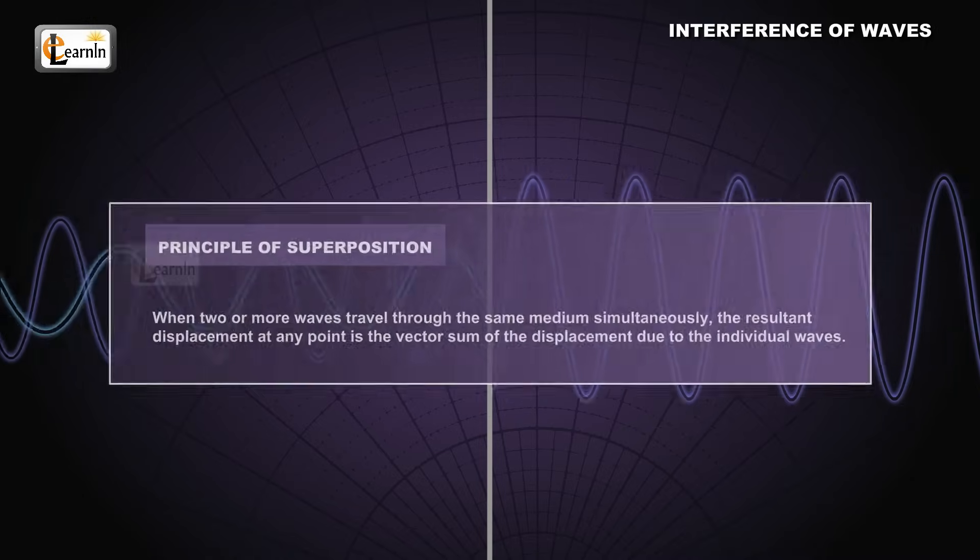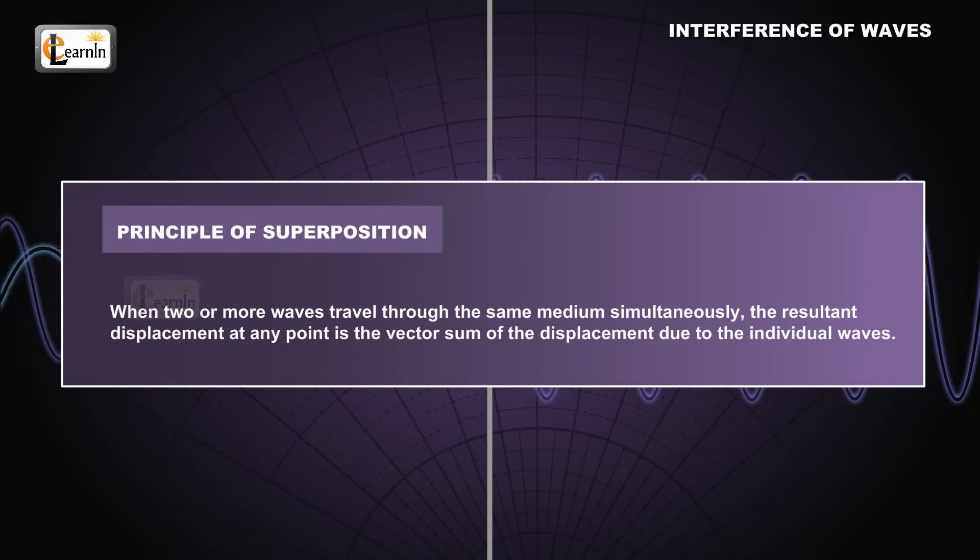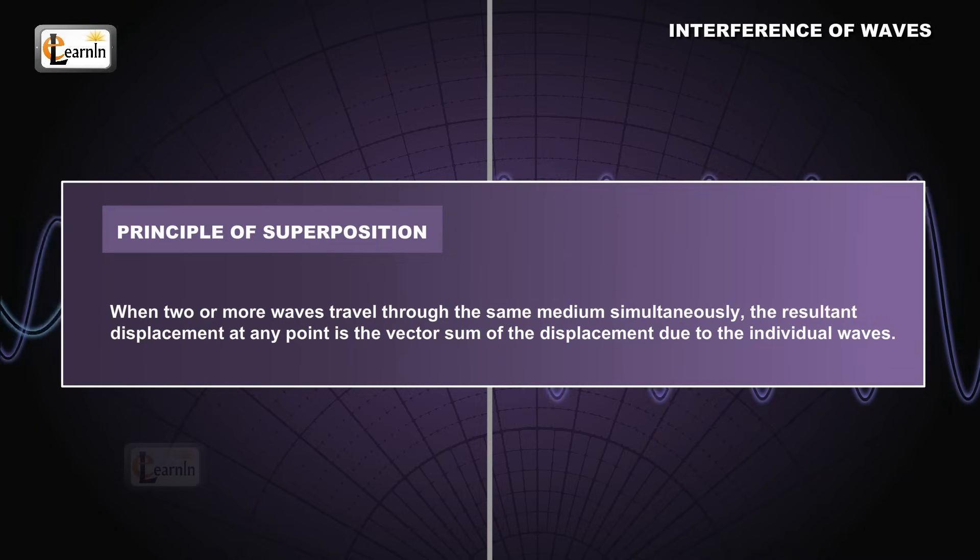The principle of superposition of waves states that when two or more waves traveling through the same medium simultaneously, the resultant displacement at any point is the vector sum of the displacement due to the individual waves.